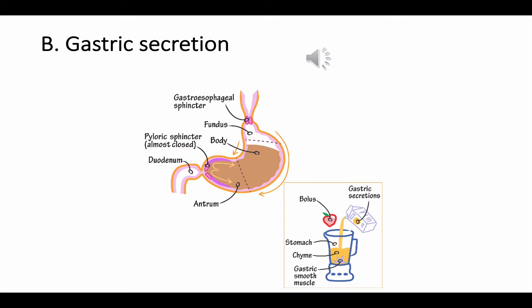The second cell type is the chief cell, also located in the body and fundus, responsible for secretion of pepsinogen, which is converted to pepsin at low pH. Control is via vagal stimulation and also by the acetylcholine neurotransmitter.